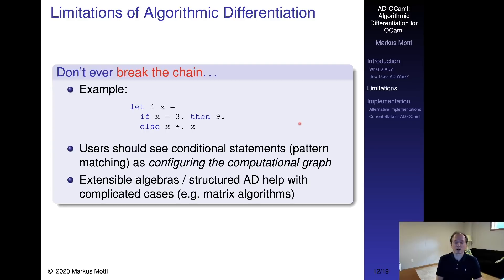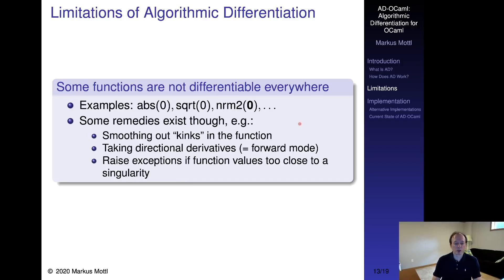Complicated cases, for example numerically stable matrix factorization algorithms, can often be handled by extending algebras with new operators. Certain operations are inherently non-differentiable for certain inputs, for example taking the maximum of two numbers, which leads to kinky user programs. Such kinks in the function can typically be smoothed out, and AD-OCaml provides support for that. Since it can also calculate directional derivatives, and not just gradients, it can handle some cases that reverse mode cannot. We could also handle such situations by raising exceptions if some value is too close for comfort to a singularity.